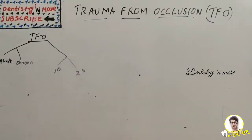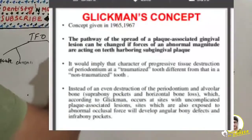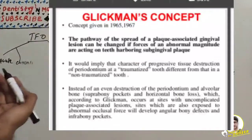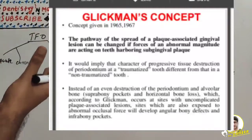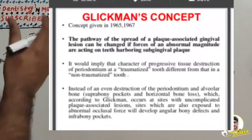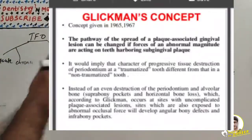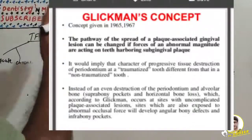Two key concepts were put forward regarding trauma from occlusion. The Glickman concept states that the pathway of spread of a plaque-associated gingival lesion can be changed if forces of abnormal magnitude act on teeth harboring subgingival plaque. Glickman proposed that this force plays an impact in changing the spread of inflammation, implying that progressive tissue destruction at a traumatized tooth is different from that at a non-traumatized tooth.